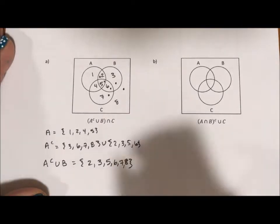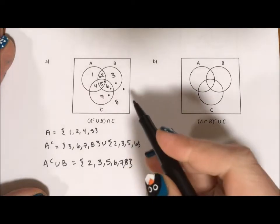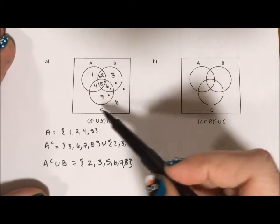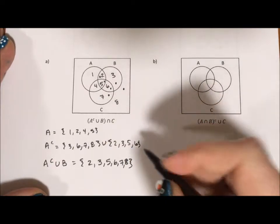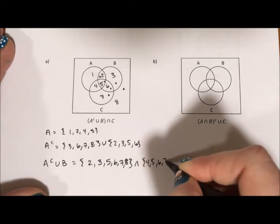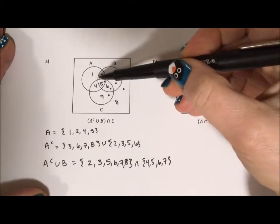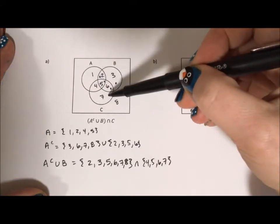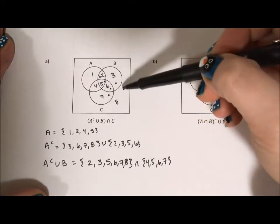But we want to do the intersection with C. So what we have shaded in, how does that intersect with 4, 5, 6, and 7? Well, visually, we can see that it's going to be these three sections because we want to know what's common with the dots.